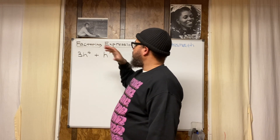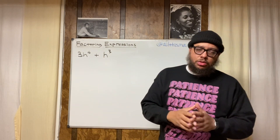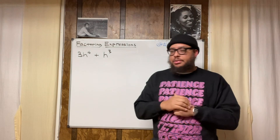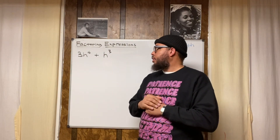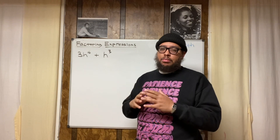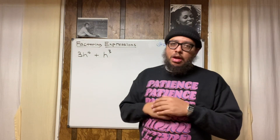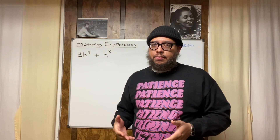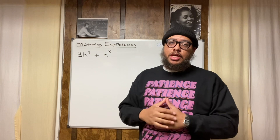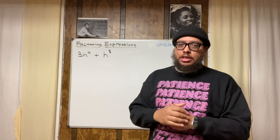It's a binomial. So we're going to factor it — we want to break it down into separate parts or separate pieces that have smaller exponents. First, what you want to do is try to find a GCF. Now, every expression is not going to have a GCF, but you want to check to see if the expression has one. GCF stands for greatest common factor.